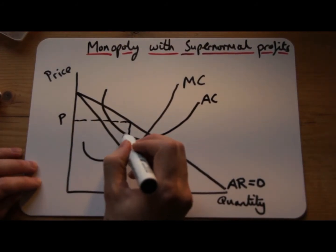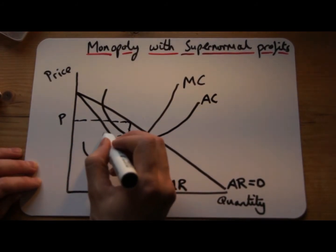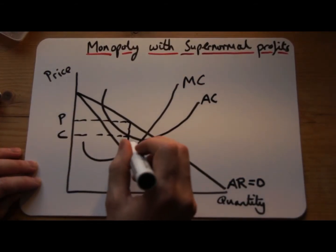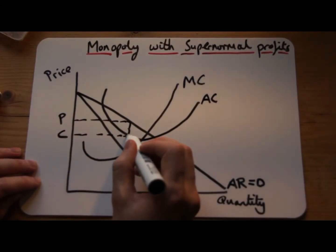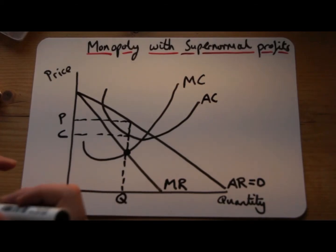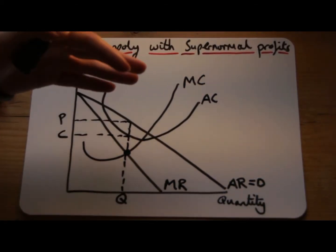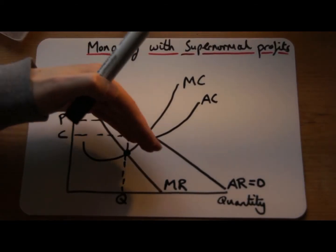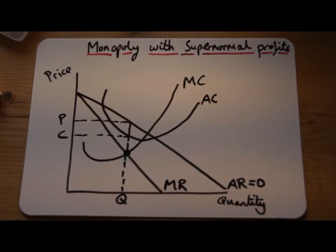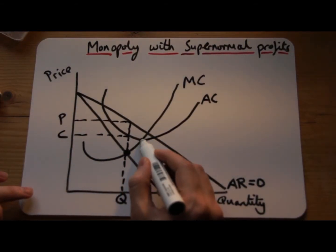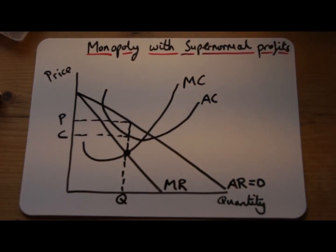So here we have the costs. We go from the quantity up to the average cost line and across to find the costs. The reason I left the average cost at the end is to make sure it's below the price line, and remember it must intersect marginal cost at the lowest possible point.